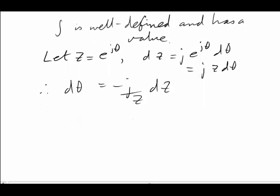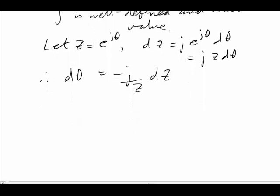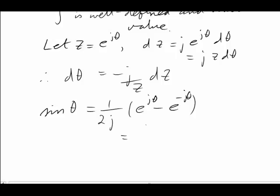Up until now, we've been dealing with cos, but now we've got sine. We need the Euler result for sine. It's 1 over 2j e to the jθ minus e to the negative jθ, which in turn is 1 over 2j times z minus 1 on z.